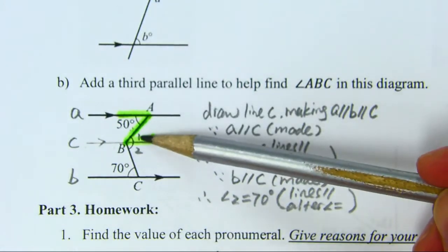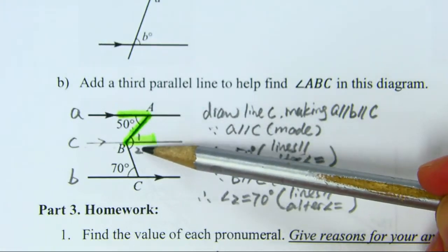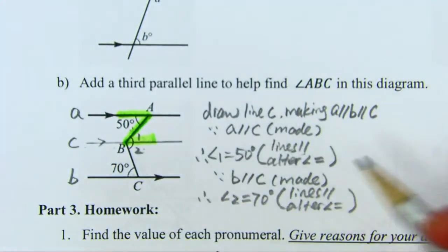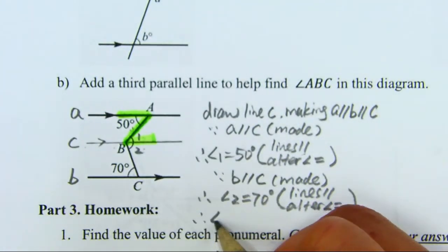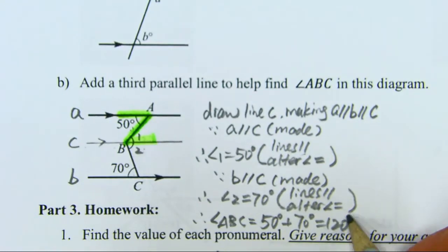We found angle 1 and angle 2. If we know angle 1 and angle 2, angle ABC is the sum of these two angles. Therefore angle ABC equals 50 plus 70 equals 120 degrees.